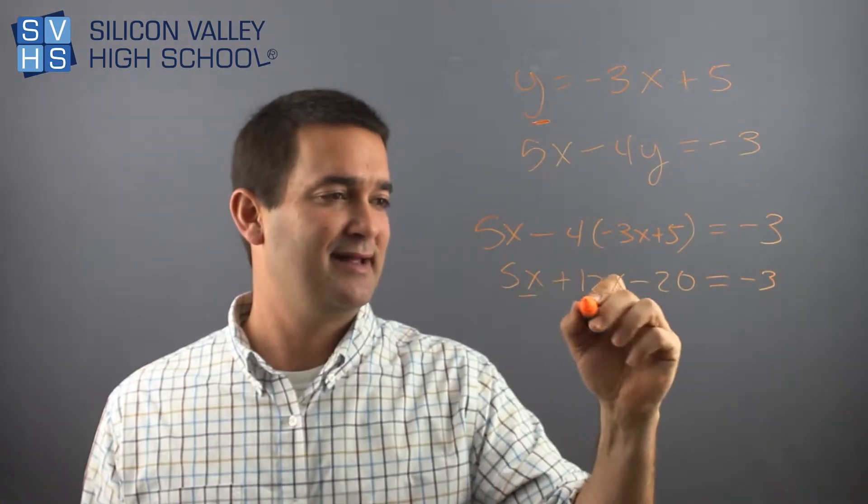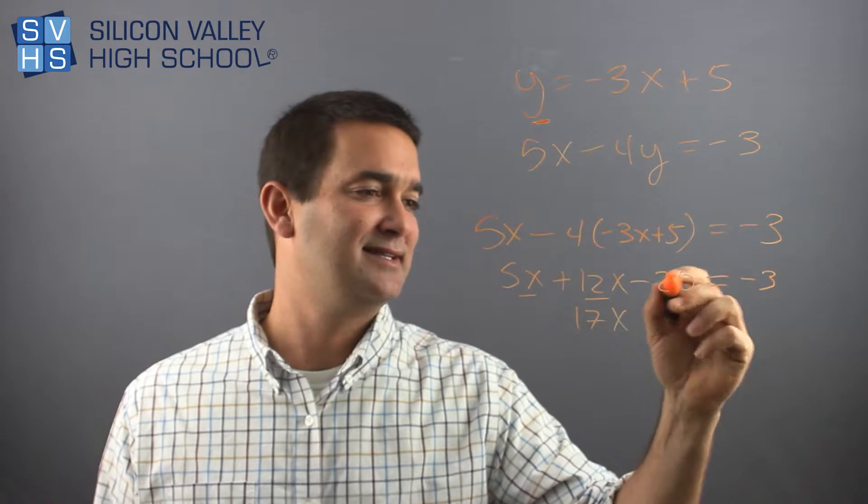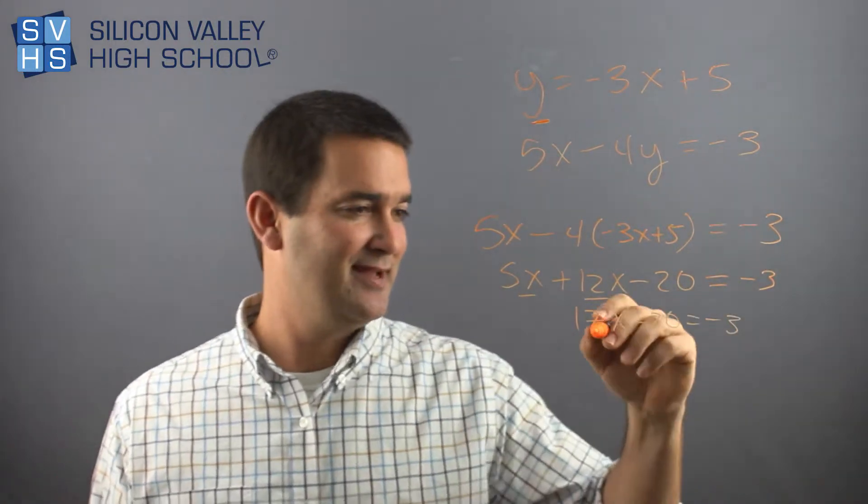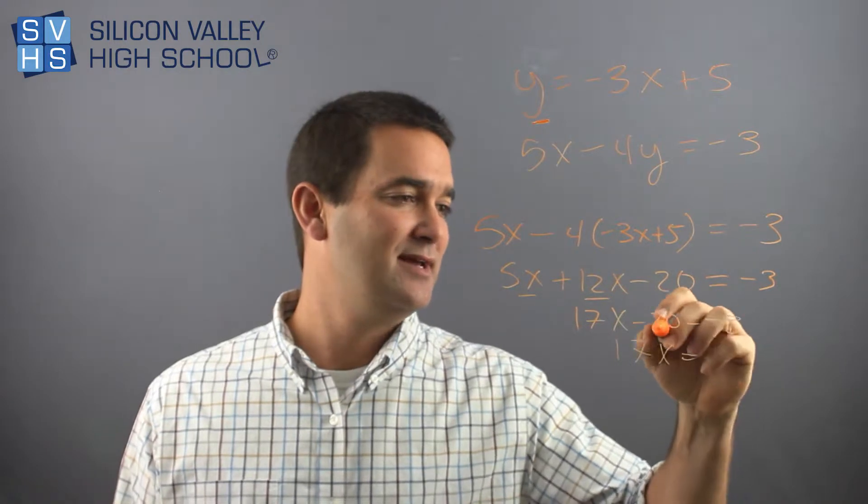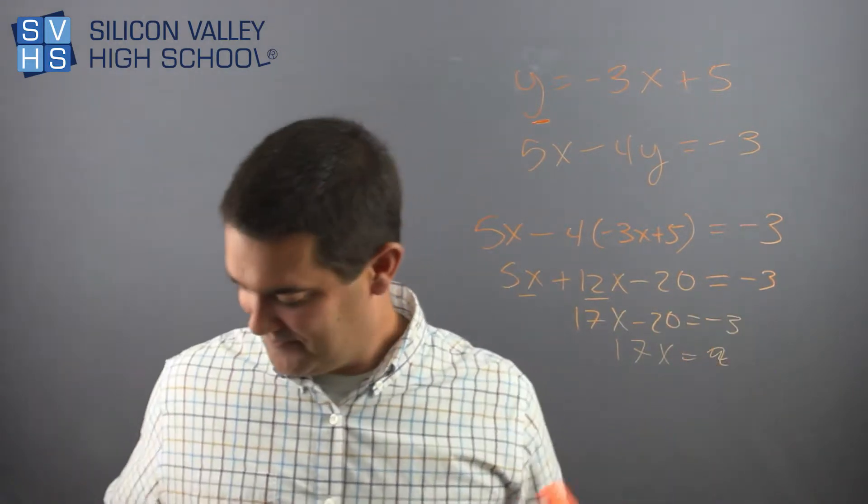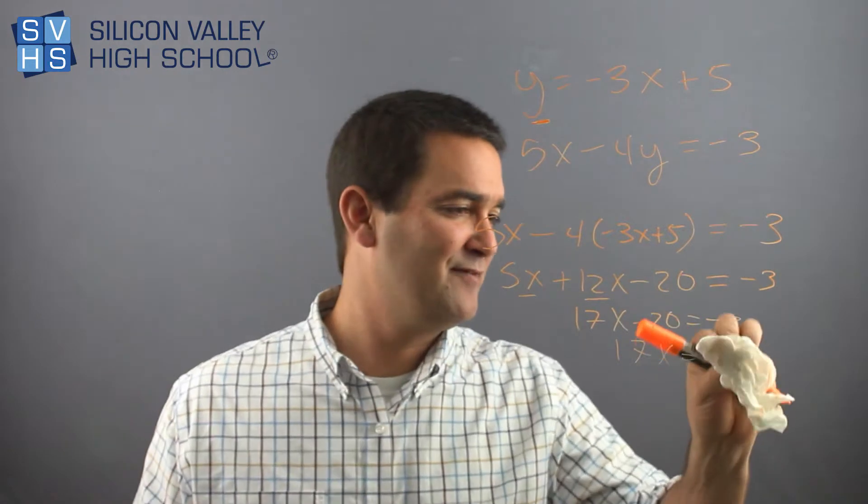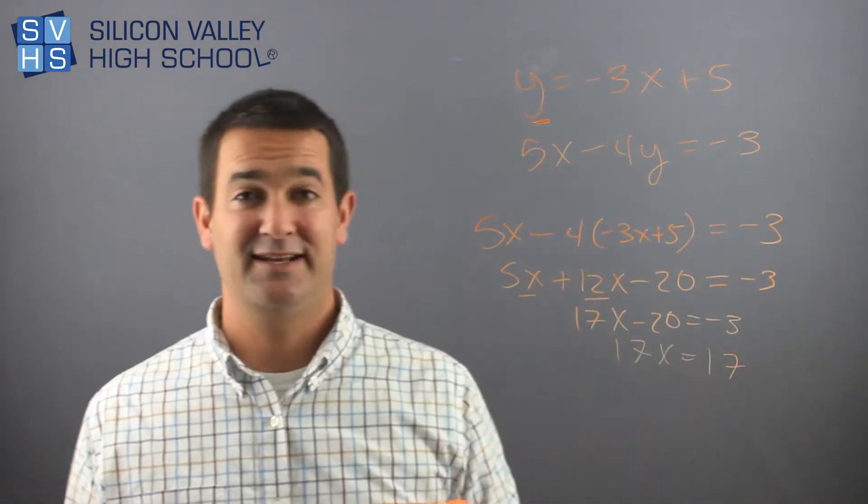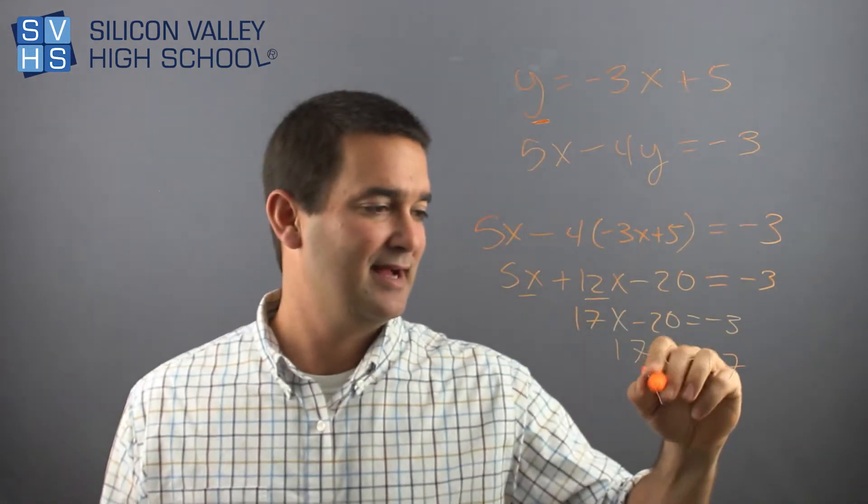So this looks like, adding like terms, I get 17x minus 20 equals negative 3. Skipping no steps. Now I get 17x equals, add 20 to both sides. I should be professional and erase that. Equals positive 17. It's a miracle. X equals 1.